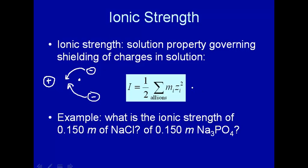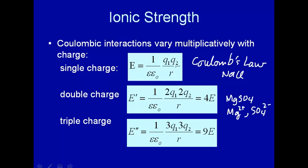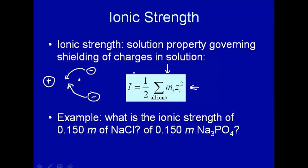This is how we define ionic strength: it is a concentration times charge squared. We put charge squared in there because the energy of interactions varies as the square of the charge. So this is the definition of ionic strength — for each ion in solution, you take its concentration, multiply by its charge squared, add them all up, and divide by one-half.